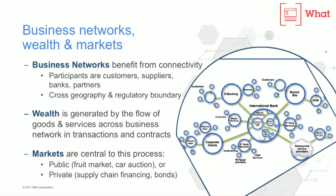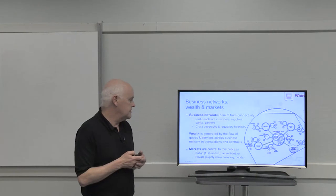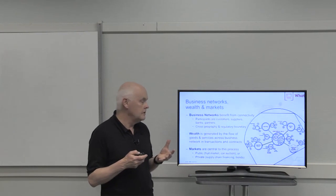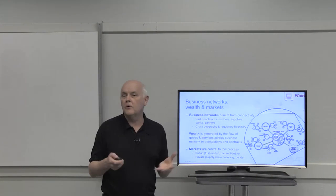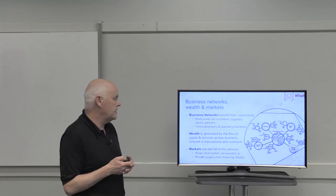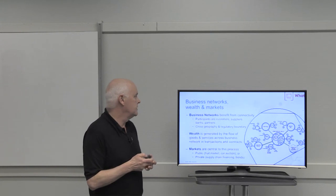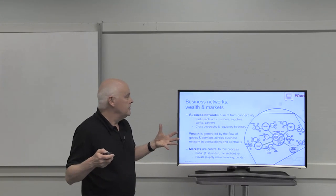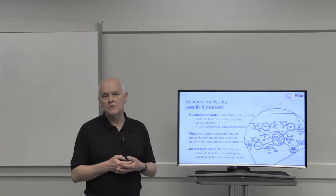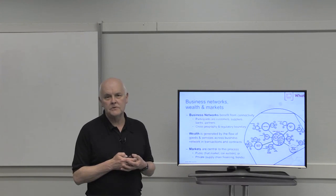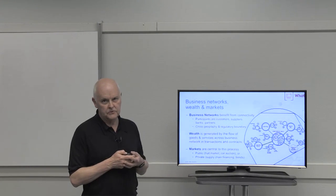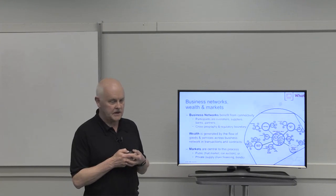Markets could actually also be of two different types. We can actually have an open market, such as an auction, or a private market, such as things like supply chain financing or bonds exchange. So effectively, these business networks are fundamental to the application of blockchain, as I'll come and describe as we go through the rest of the presentation.